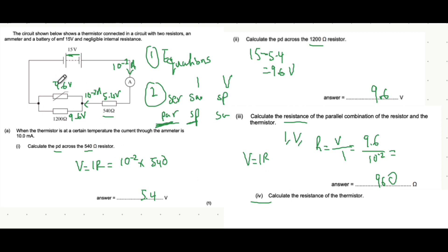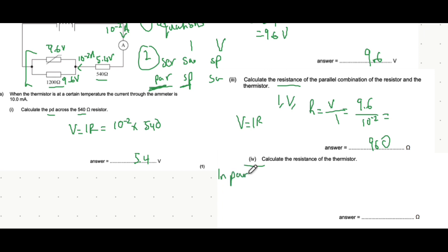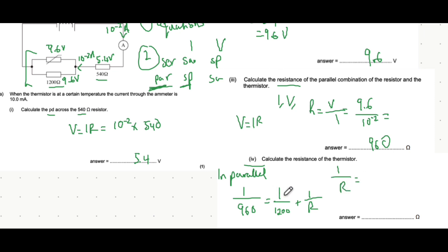Now use that to calculate the resistance of the thermistor. We know the total resistance of the parallel combination is 960 ohms, and we know one branch is 1200 ohms. Using the parallel resistance formula: 1 over 960 equals 1 over 1200 plus 1 over R. Rearranging: 1/R = 1/960 − 1/1200, which gives 1/4800. Taking the reciprocal, the resistance of the thermistor is 4800 ohms.